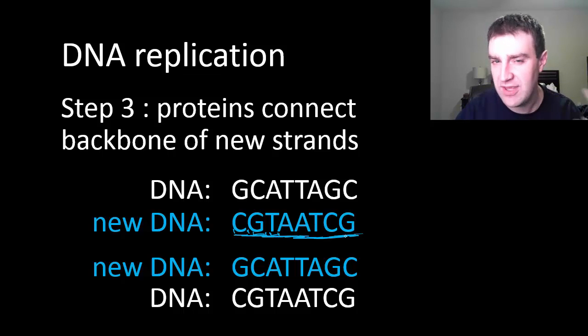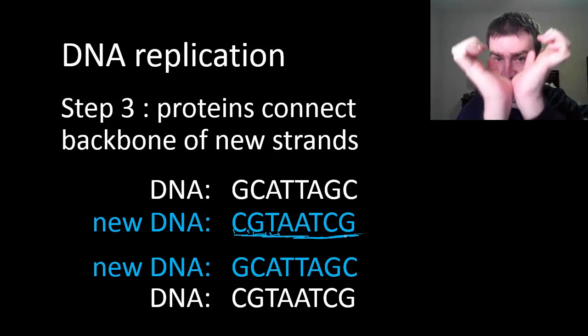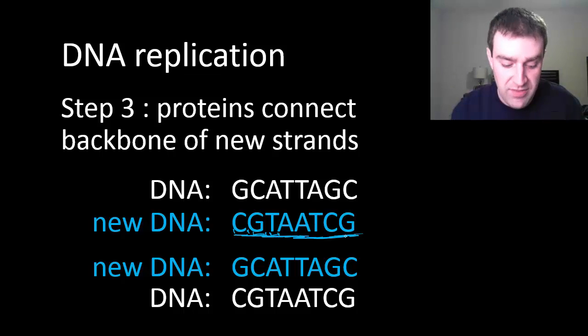Maybe another protein kind of comes in and glues the sugar phosphate backbone together so that it's actually a continuous strand. When that happens, the double helix will be able to retwist and we've really got two complete copies. Remember that in eukaryotic cells those copies will be tied together like an X when the DNA packs up into chromosome form to continue the process of cell division.